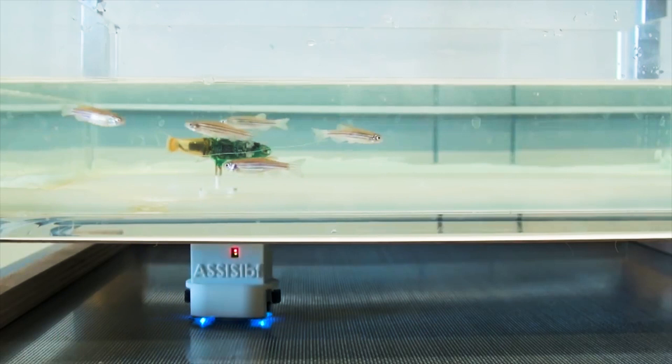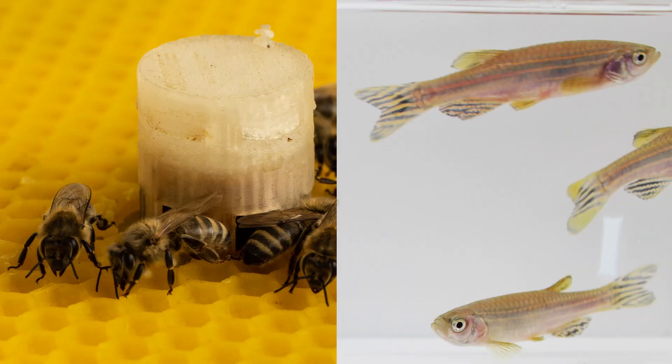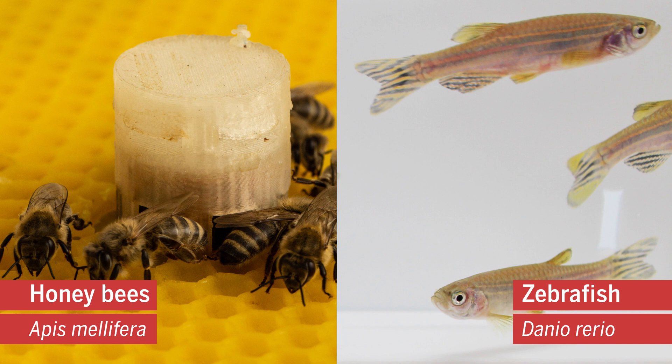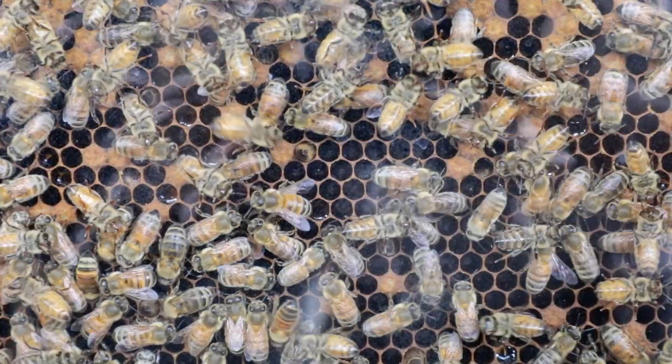To further explore this relationship, researchers used robots to mediate between two species unlikely to ever encounter each other in the wild, zebrafish and honeybees. The researchers chose these species because they're both social and gregarious animals, who regularly make decisions as a group.